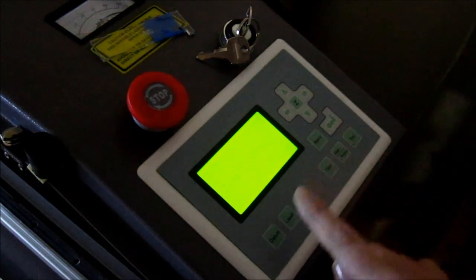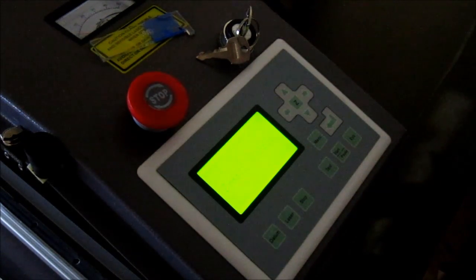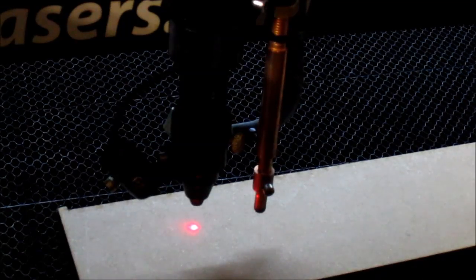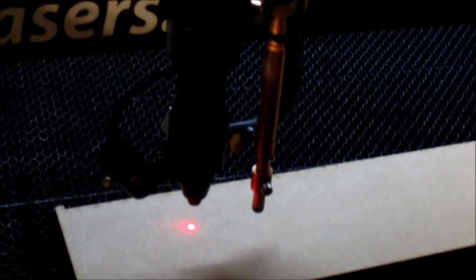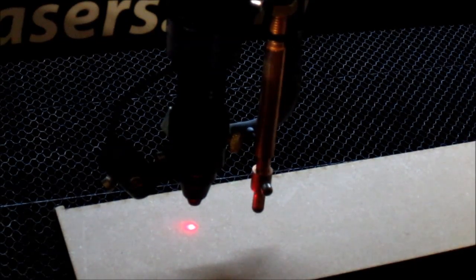At the machine, select Z mode, press Datum. The Z axis will move up to the autofocus tool and then move down according to the measurement you entered in the software.